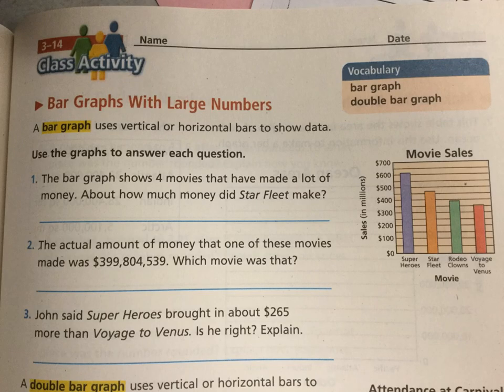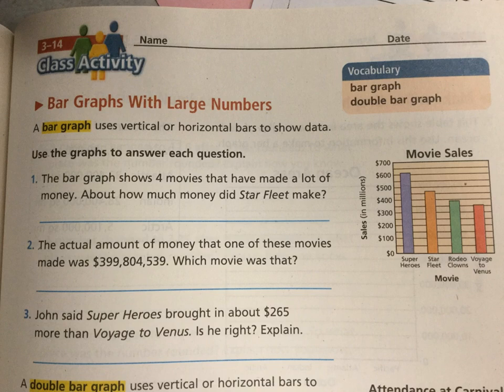Bar graphs are used for large numbers. A bar graph uses vertical or horizontal bars to show data. The bars can go up and down with the information about what each bar stands for on the bottom and the amount on the left, or it can go left to right where the information about each bar is on the left and the amount is on the bottom. The bar graph we have shows movie sales. Let's look at the questions and answer those together.